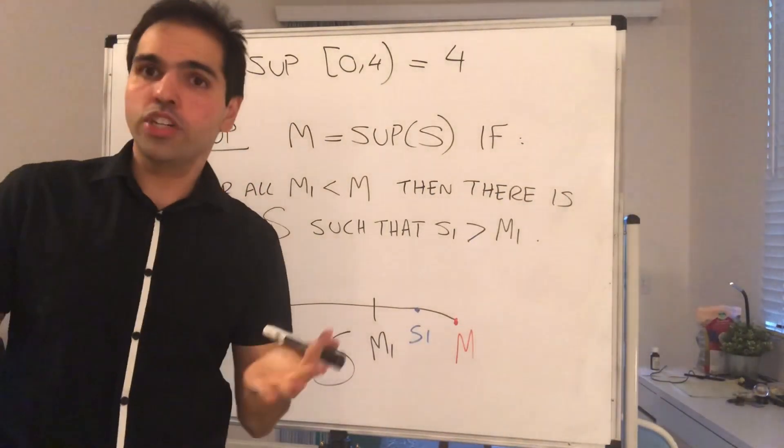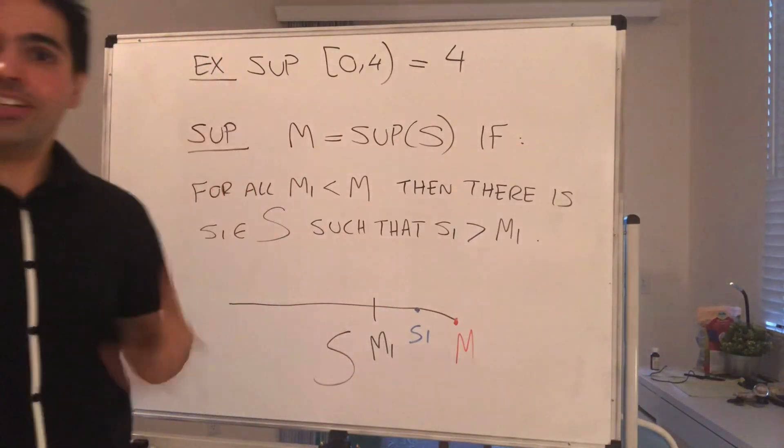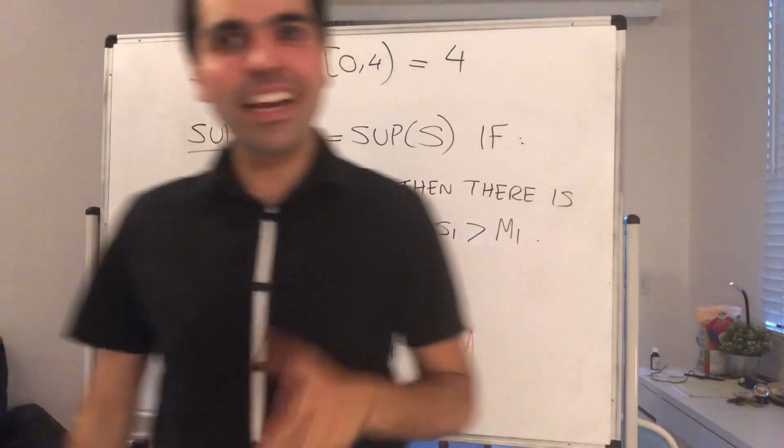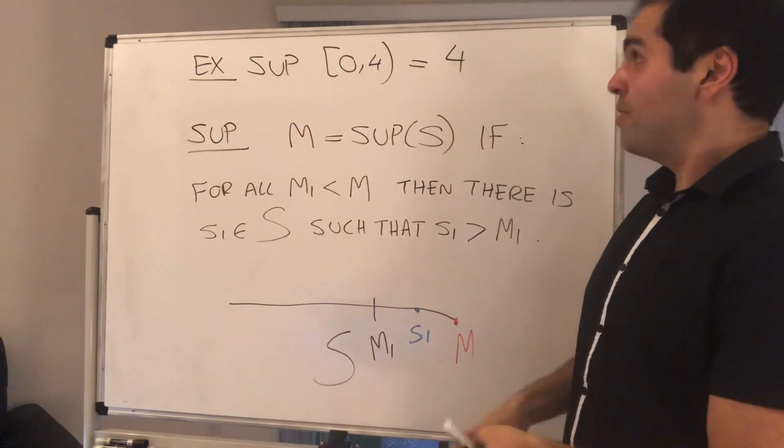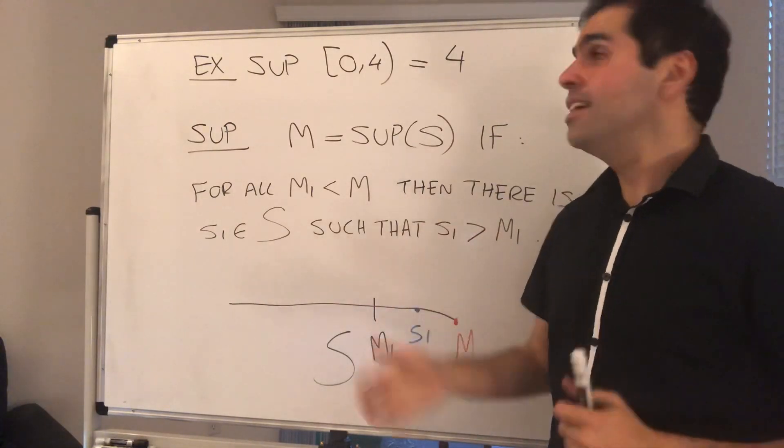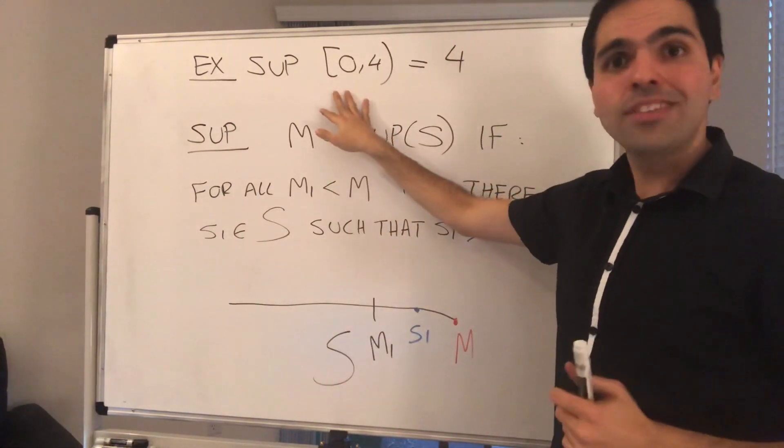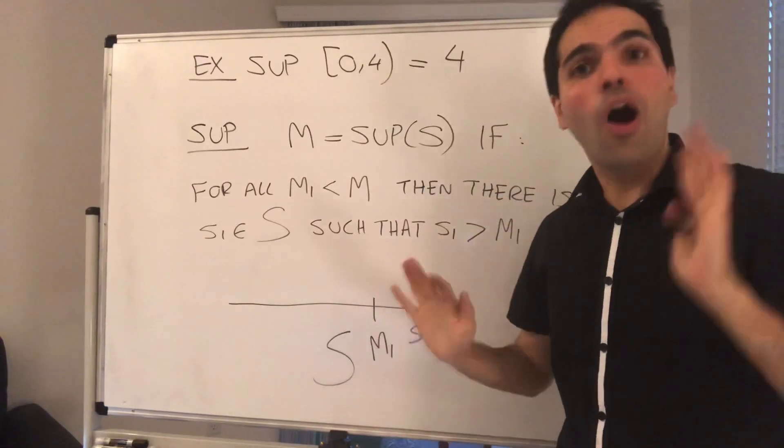Now the question is, why should we care about this? Actually, a lot. And in this video and the next one, we'll do a lot of fun consequences of supremum. But the main reason we care about this is what I just said. Even though the maximum doesn't always exist, it turns out the supremum always exists.